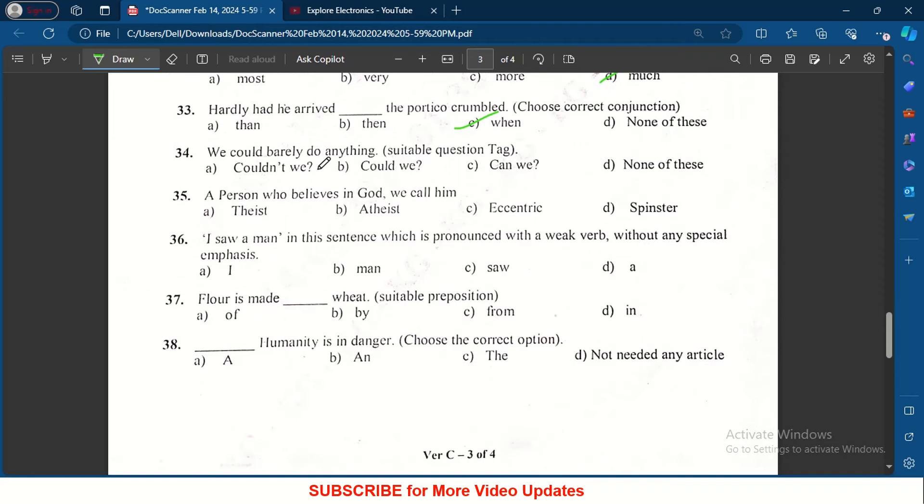We couldn't barely do anything. Suitable question tag we need to give the suitable question tag for this: could, couldn't we, could we, can we, and none of this. Could we barely do anything? A person who believes in God is theist.